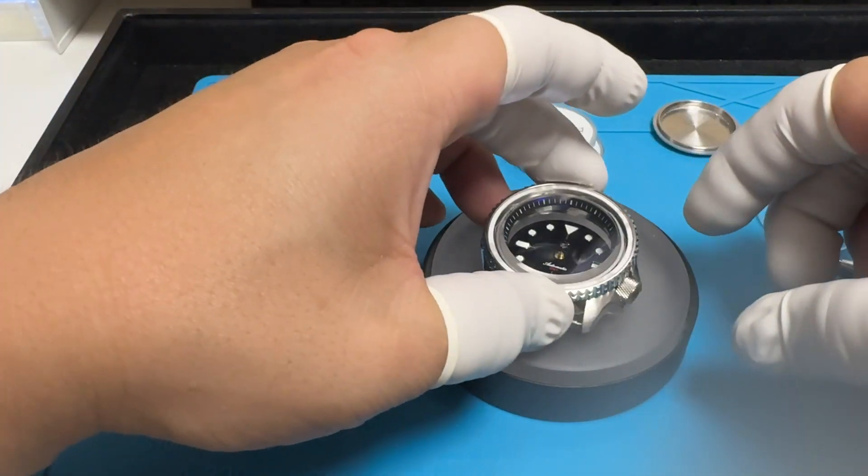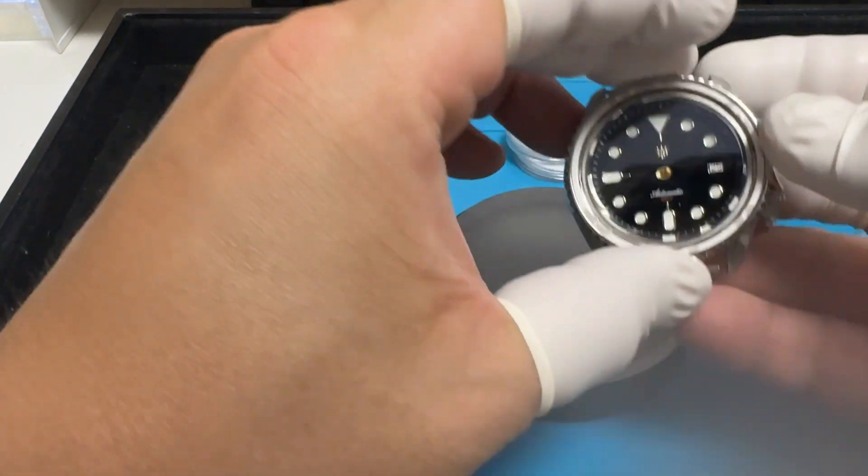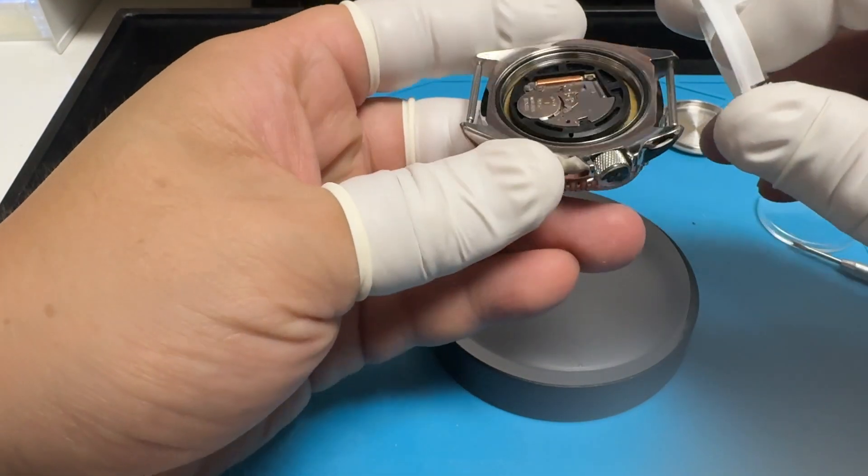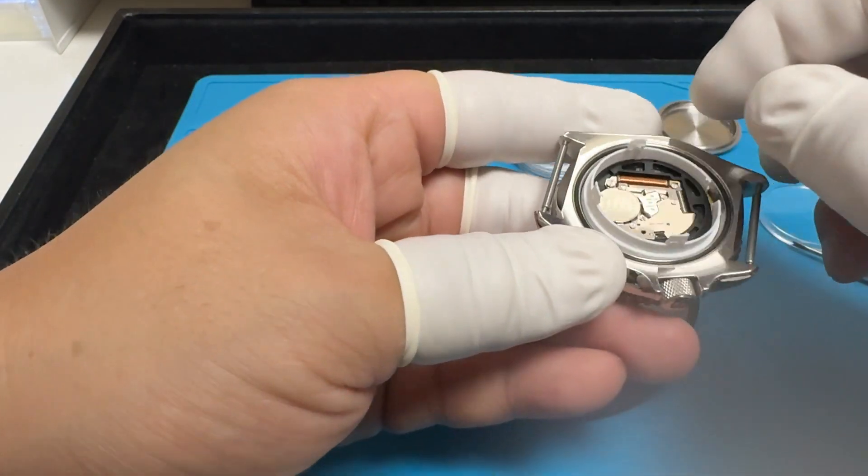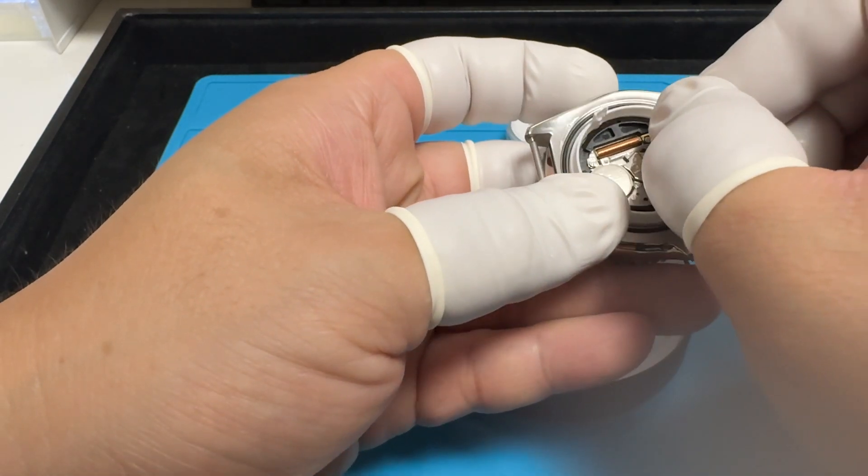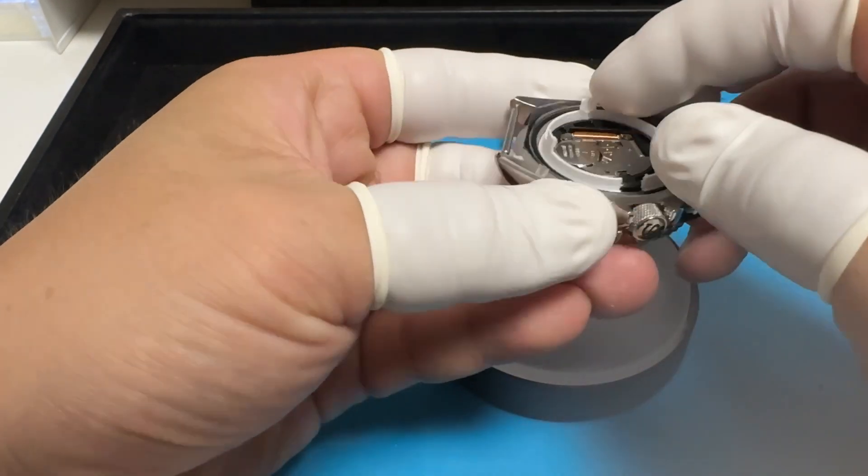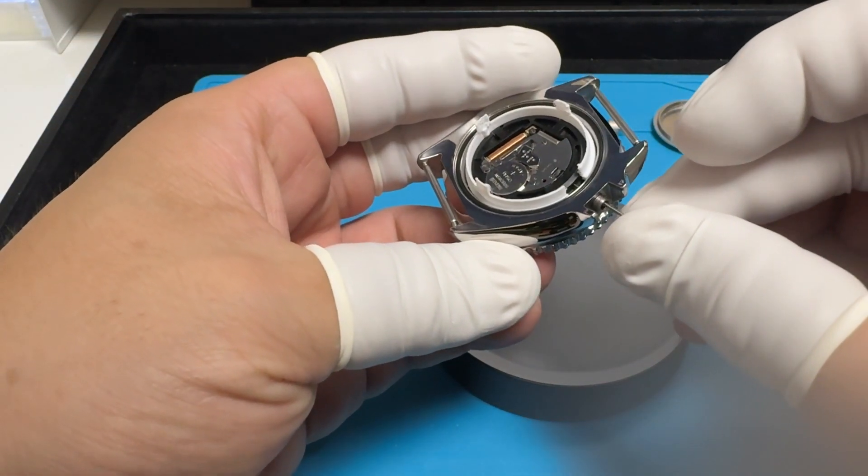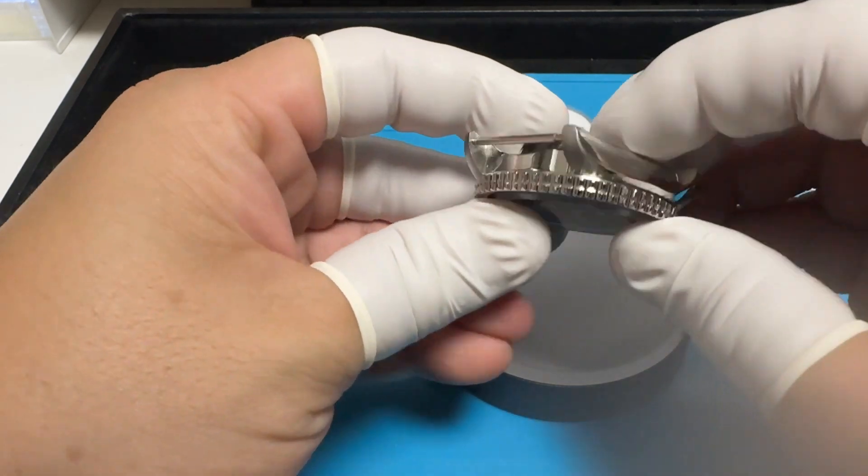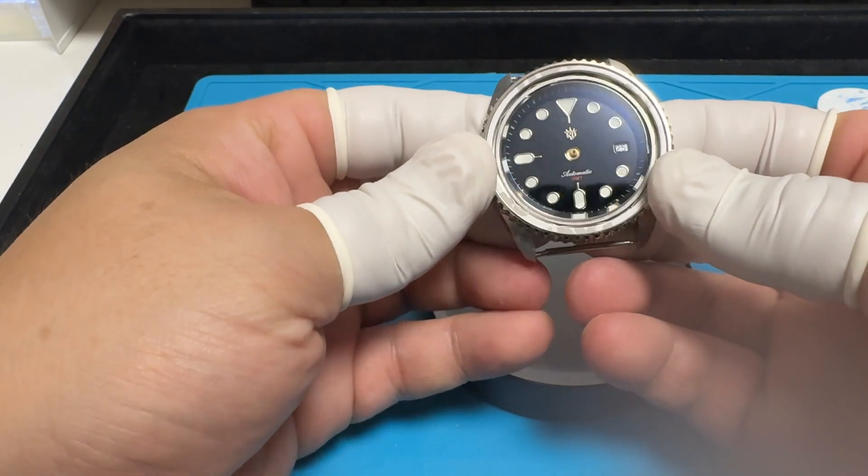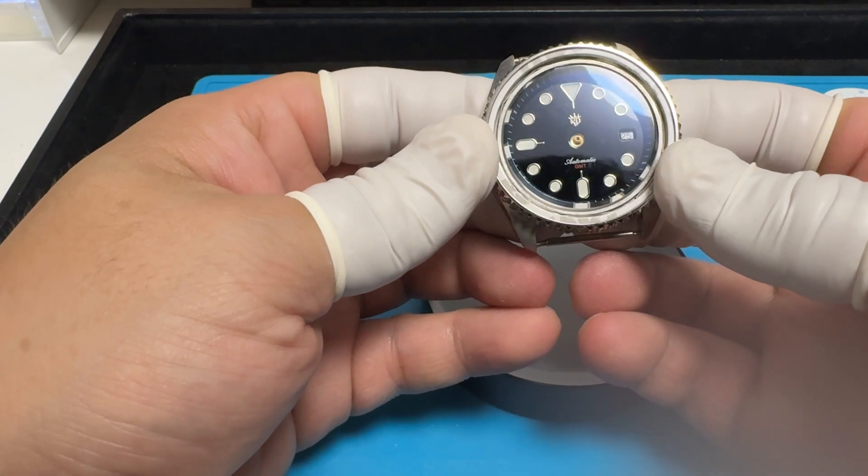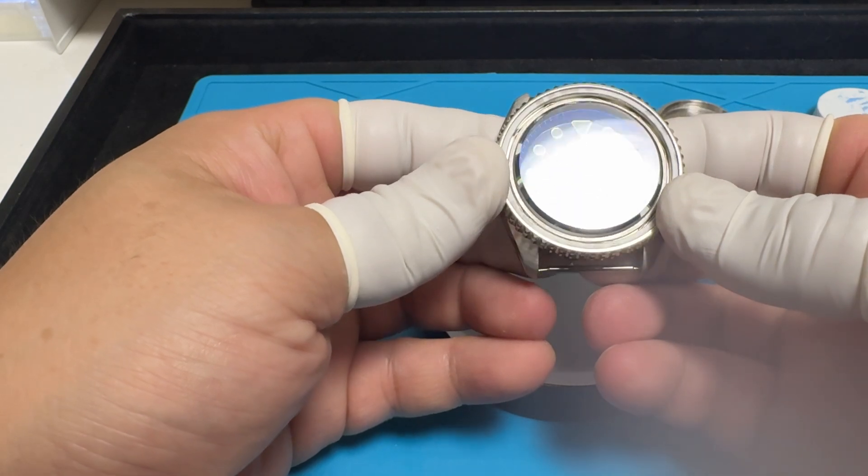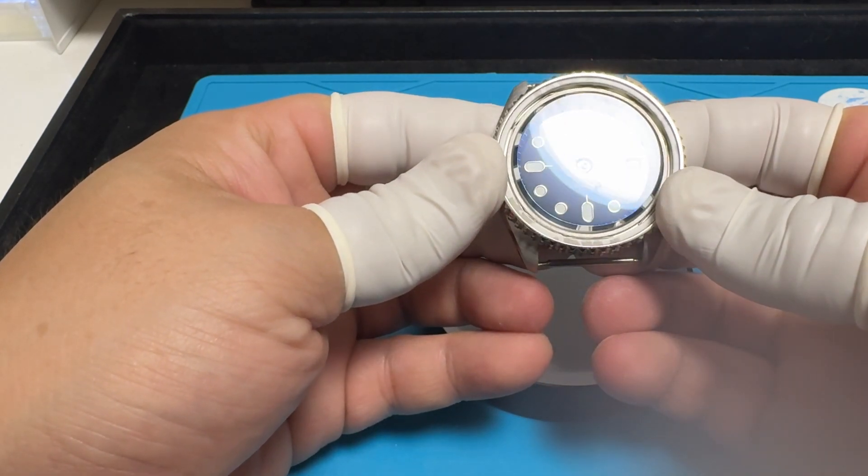What I'm gonna do now is test fit it inside the case to make sure that it lines up, and if it doesn't I could do some minor adjustments. At the same time I'll test fit the movement holder to see if it fits as well. This is where I insert the crown stem into the case and into the movement just so I could see if it's aligned or not. It looks pretty good.